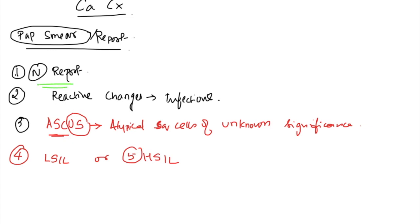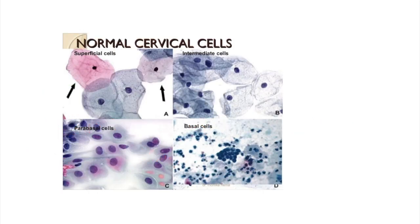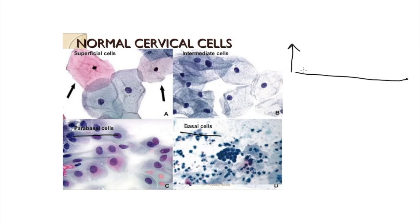Looking at the normal report: the cervical epithelium has basal cells and parabasal cells at the base. Going from the basement membrane upward, basal and parabasal cells will predominate when there is no hormonal influence.